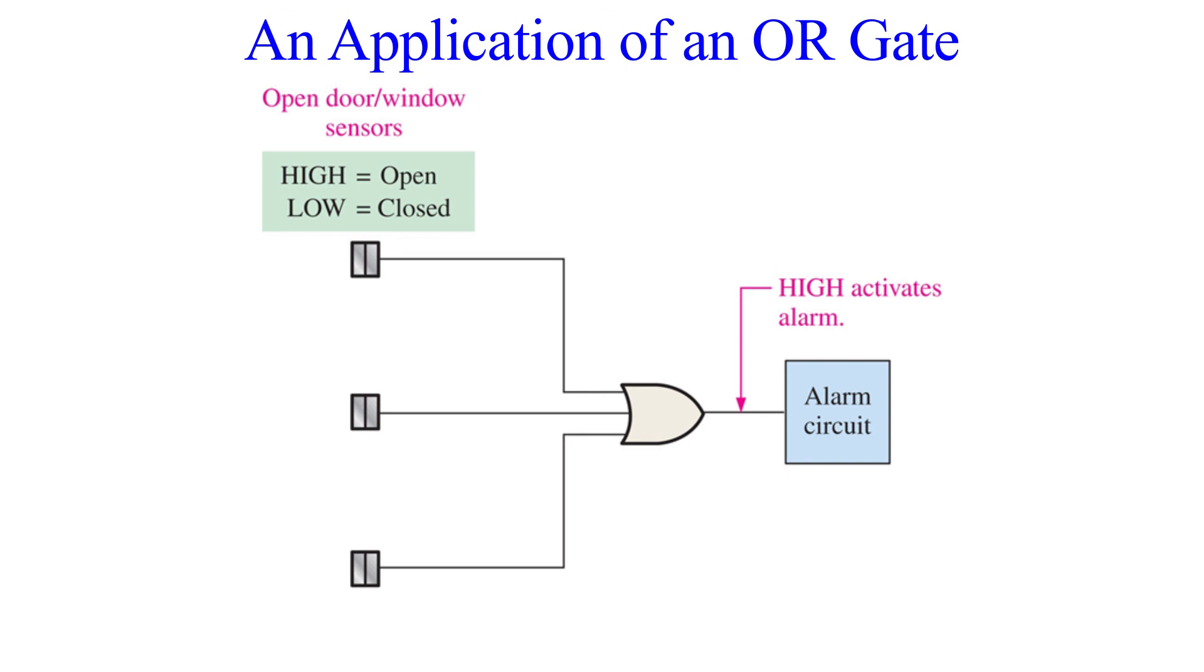If the window is opened, the contact is disengaged, which results in a high on the OR gate. This is how an alarm system can be implemented on these windows. As long as the windows are closed, all inputs on the OR gate are low, and so the output is low.